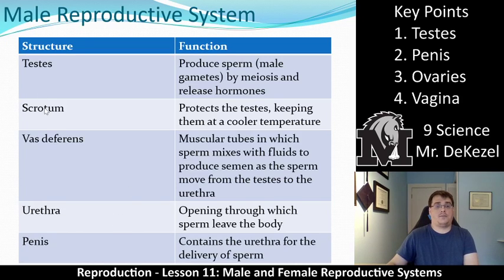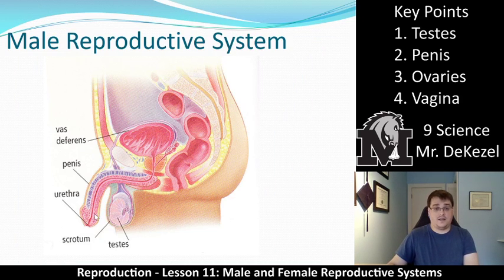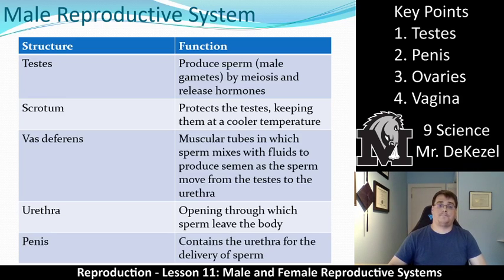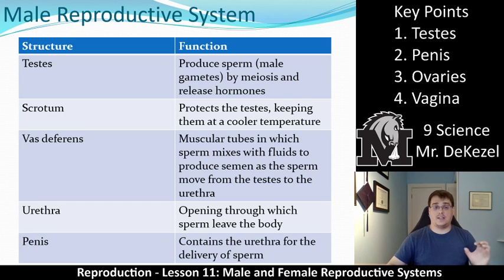The next portion is referred to as the scrotum. The scrotum is what protects the testes. It is the skin that surrounds the testicles and the function that it performs is it allows the testes to be kept at a cooler temperature. Sperm and the testes are very temperature dependent. If it gets too warm, there can be damage, which is why the testes are located outside of the male body, contained within the scrotum.